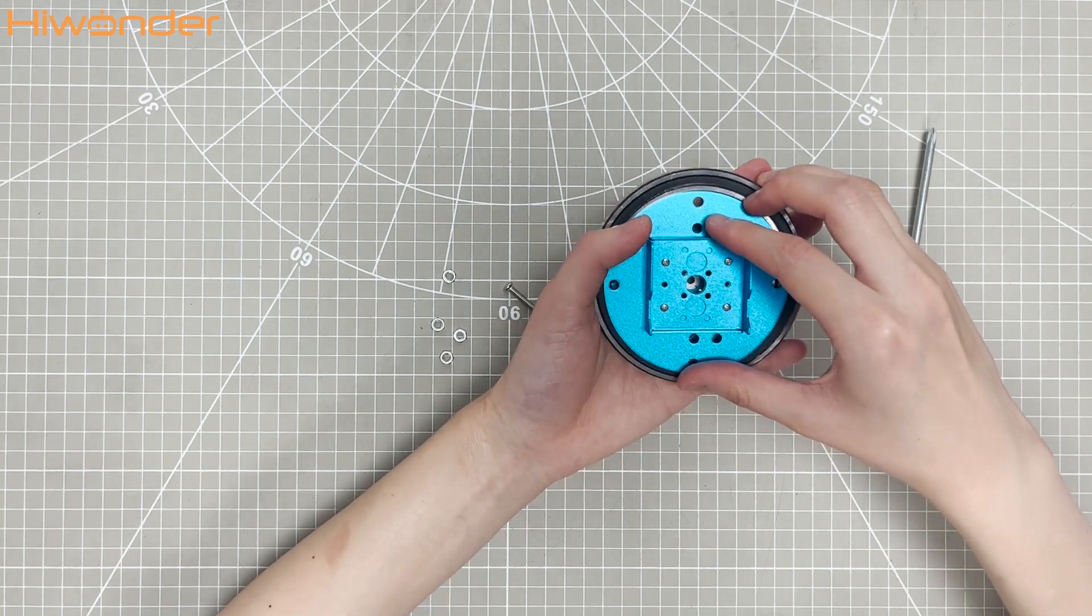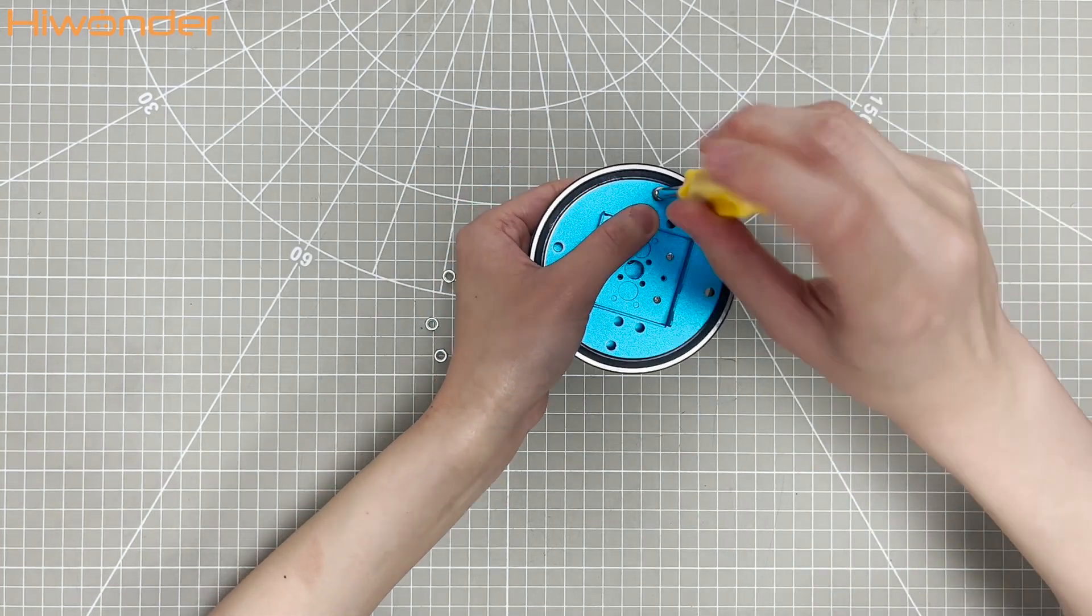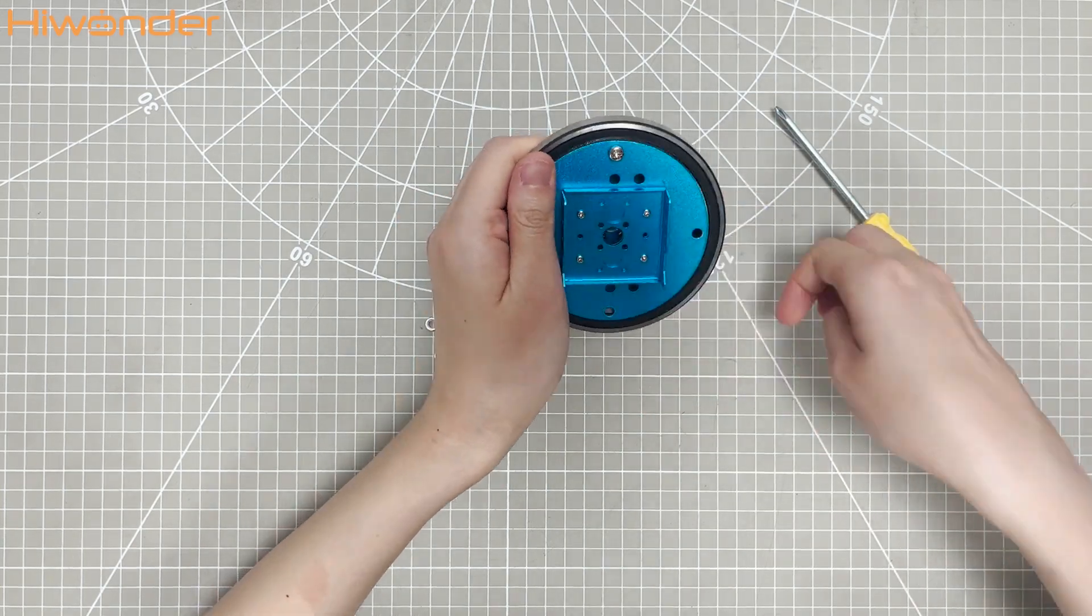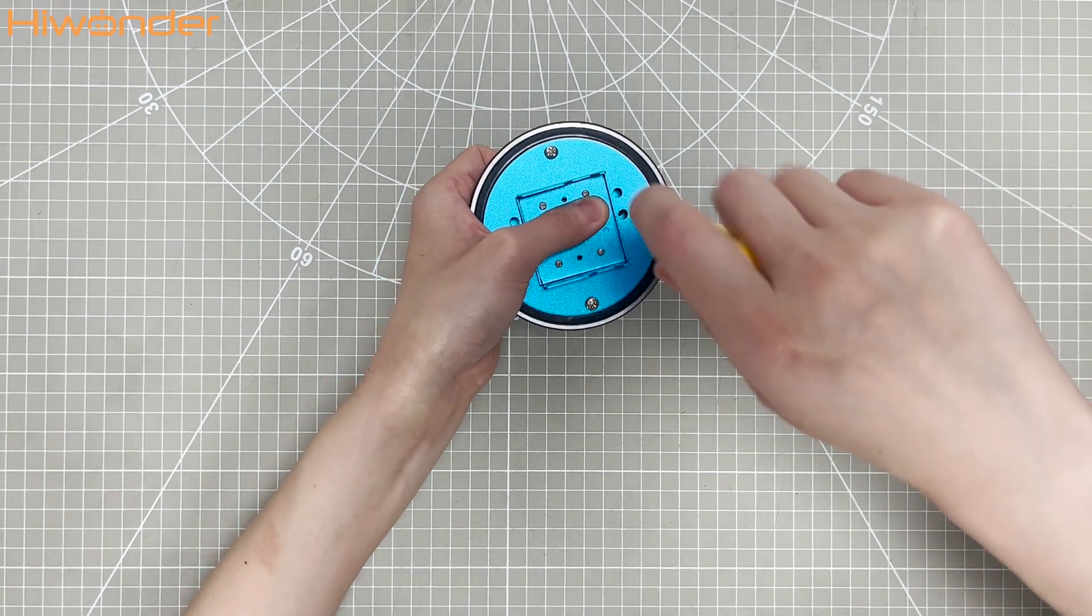To secure them better, start by fixing one screw but not too tightly, and then insert the remaining three screws into the holes. Finally, tighten all the screws.